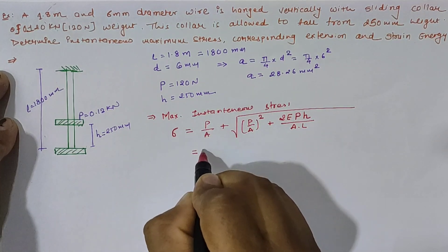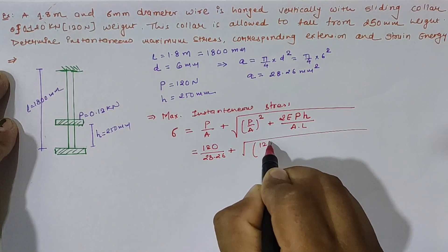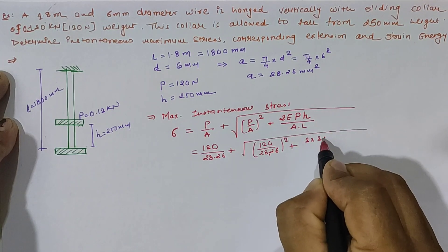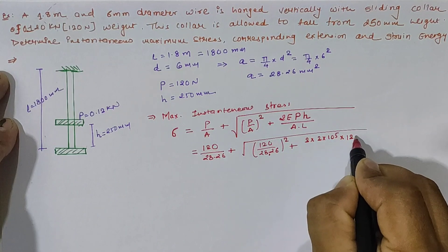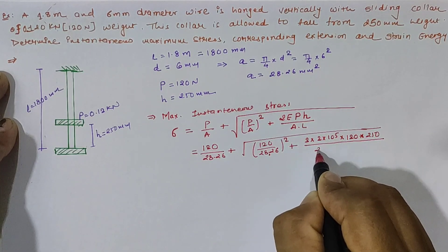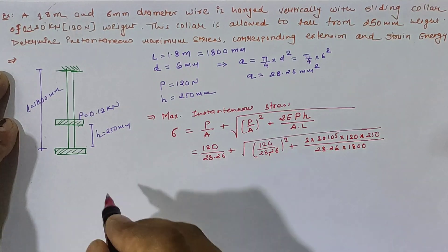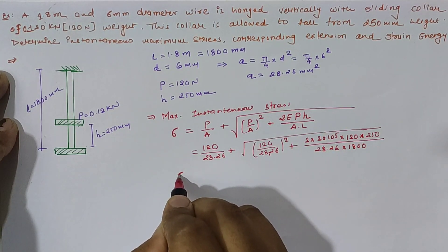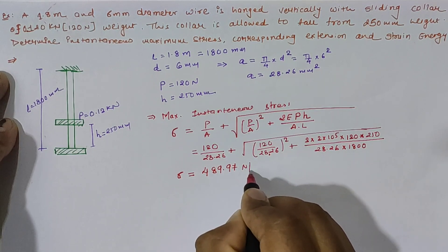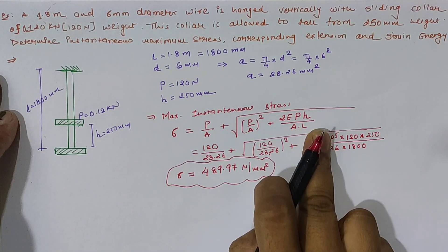Putting in all values: load P = 120 N, area A = 28.26 mm², modulus of elasticity E = 2 × 10⁵ N/mm², fall height h = 250 mm, and length L = 1800 mm. Solving this gives maximum instantaneous stress σ = 489.97 N/mm².